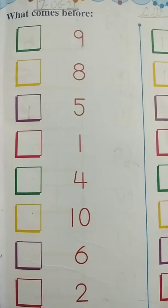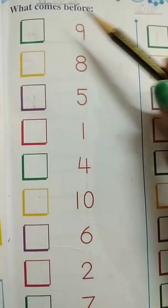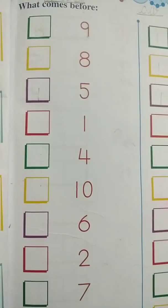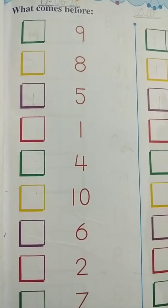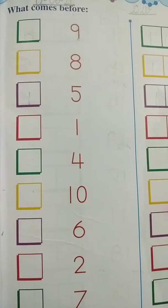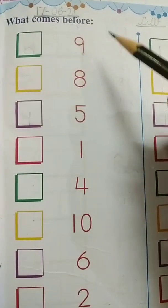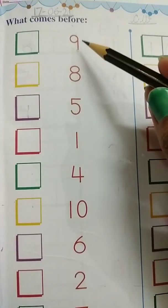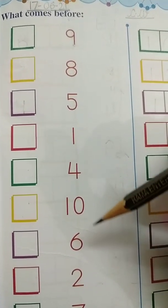In this page you have to write what comes before the given number. These numbers are given which number you all have to write. Yesterday I have already told you how to find what comes before. You just have to move one step backward.